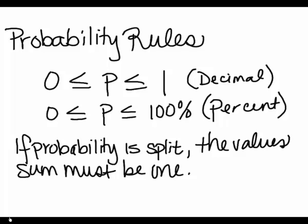If you have a 20% chance that it's going to rain today, then you have an 80% chance that it's not. Which means if you split probability into any categories, then the sum of the probabilities has to equal 1.